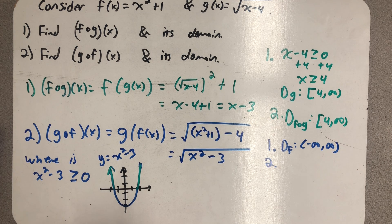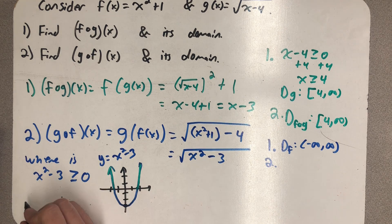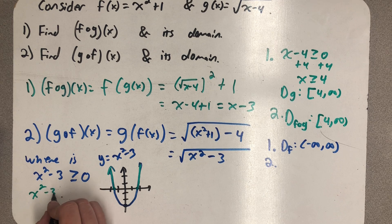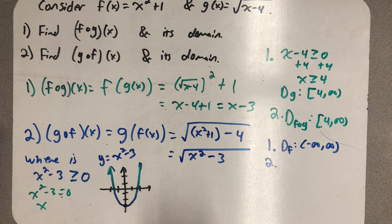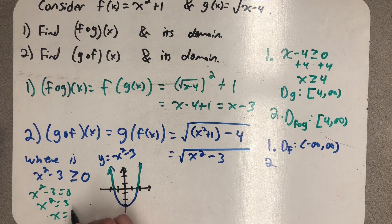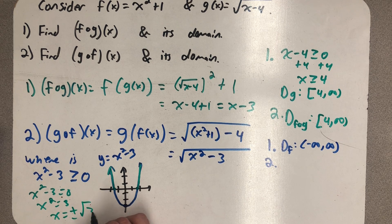And so I need to know where x squared minus 3 is equal to 0. So I know what x value that is and what x value that is. If I add 3 to both sides, I get x squared is equal to 3. Take a square root and we get x equals plus or minus the square root of 3.